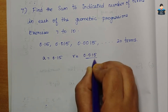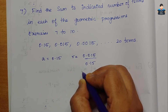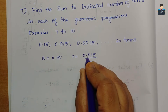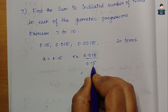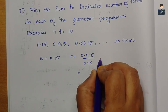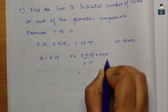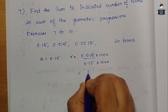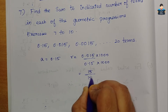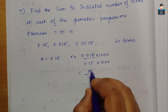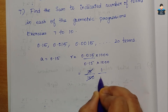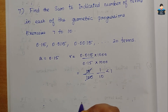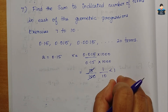Common ratio r = 0.015 / 0.15. Since there are three decimal places, we remove the decimals by multiplying by 1000 on numerator and denominator, giving 15/150, which simplifies to 1/10. So r = 1/10, which is less than 1.